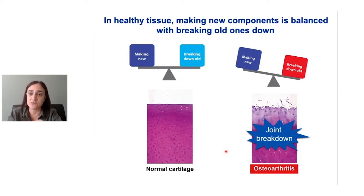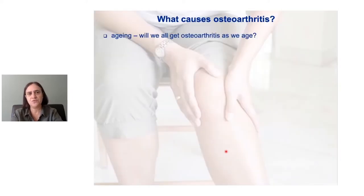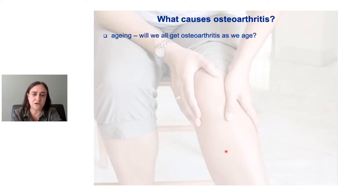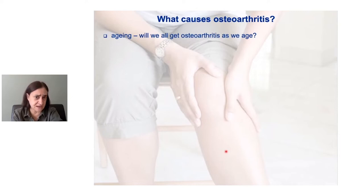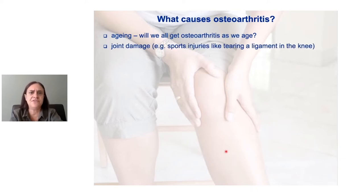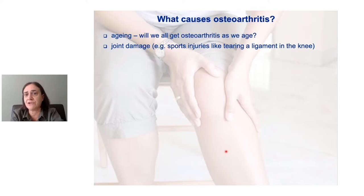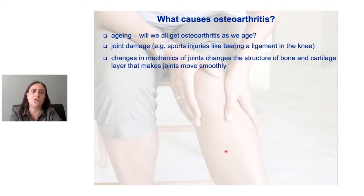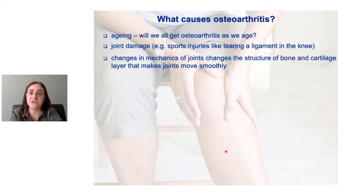That's what causes the pain and difficulties with movement. So what causes osteoarthritis? We know that one of the key risk factors is ageing. For a long time, we thought getting arthritis was just inevitable as we aged — that our cartilage just wore down over the years of using it, like a car tyre. But we don't think this anymore. We've learnt about other ways joint damage can occur, such as sports injuries — if you tear a ligament in the knee, that really increases your risk of getting osteoarthritis later. The real cause is changes in the mechanics of the joint: changes in how bones move relative to each other, or changes in the muscles surrounding a joint, which alter the structure of the bone and cartilage layer.